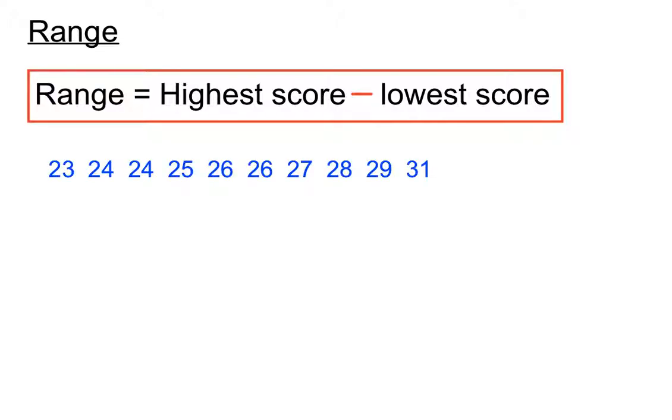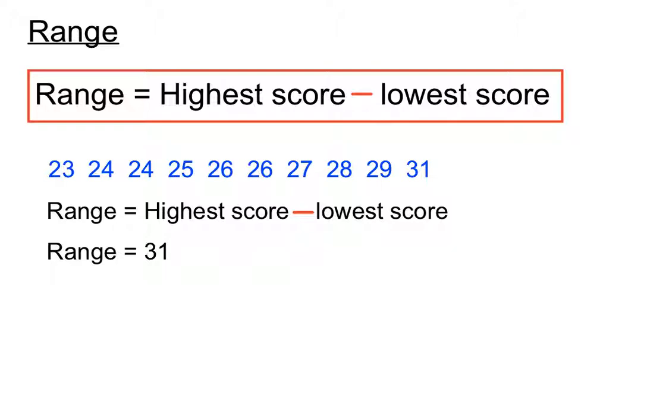Let's have a look at an example. Now here, these scores are all in order, which is pretty handy, but even if they weren't, we could still find the highest score and the lowest score and subtract the two. So the range is the highest score minus the lowest score. The range is 31—I think you can see that 31 is the highest score—take away 23.